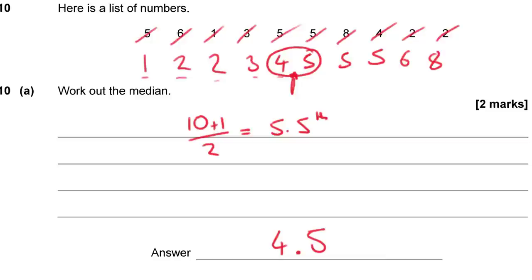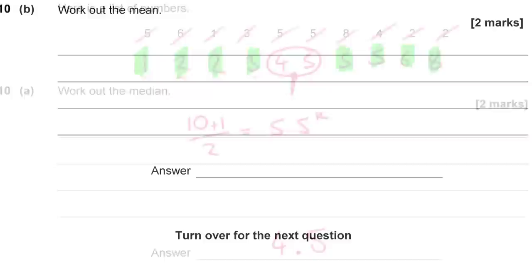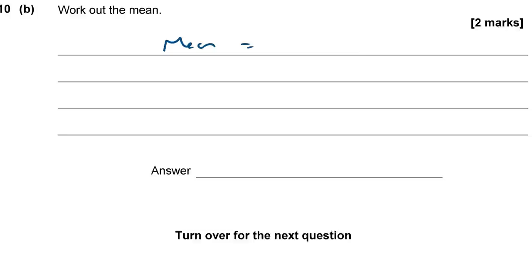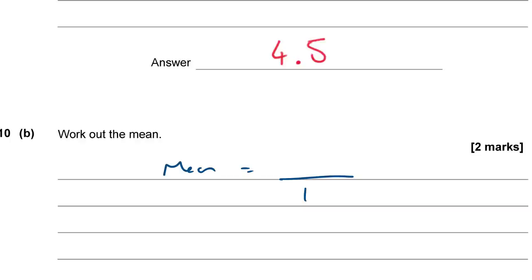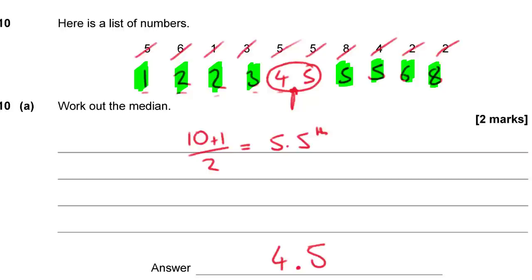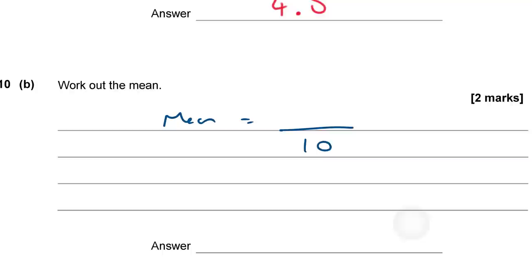Alternatively, you can count in from both ends until you're left with the middle one or two numbers — that also works. For part 10b, the mean is all numbers added up divided by the total count. Adding them up: 1+2+2+3+4+5+5+5+6+8 = 41. There are 10 numbers, so the mean is 41 ÷ 10 = 4.1.